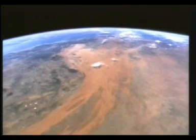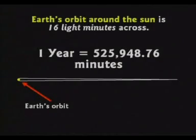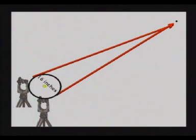That would be the diameter of Earth's orbit around the Sun. This diagram here shows a little yellow dot on the far left — that would represent Earth's orbit, 16 light minutes. A year has 525,000 minutes in it. That's a real skinny triangle if you did it to scale. It's like having two surveyors with a telescope 16 inches apart, looking at a dot 525,000 inches away, which is 8 and a third miles.